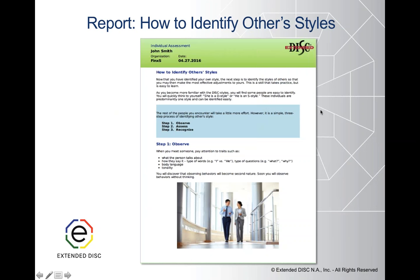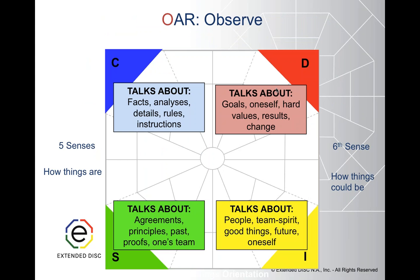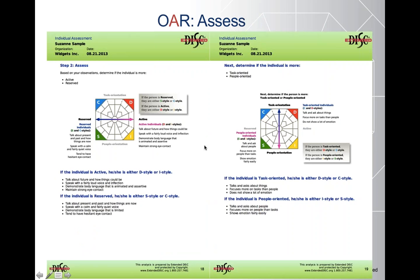It's written right there in the report — step three: how to identify the styles of others. First we observe: what do they talk about, how do they say it, their tone of voice, body language. Then we think about what do DISC styles tend to talk about? D's will talk about themselves — individualistic, future-focused. D's will focus more on goals and results, whereas I's will focus more on people and positivity. S's are your team players — they're going to talk about agreements and their team. And C's are about details, facts, and analyses.